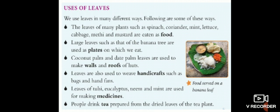Large leaves such as banyan tree leaves are used as plates on which we eat. In any functions or special occasions we eat on banyan leaves. Coconut and dead palm leaves are used to make walls and roofs of huts. If you come across any hut, you can see these coconut and palm leaves used as roof and walls.